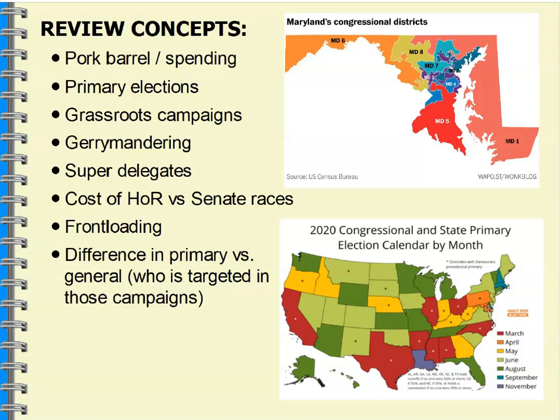Gerrymandering has had a big impact. As we see in Maryland congressional races, the Supreme Court has not stepped in on many of those cases — they've pretty much said that's a political issue, not a judicial one. We solve constitutional problems, not political ones. We saw gerrymandering's impact in North Carolina, Wisconsin, and Maryland. Elections have consequences, and this is something that needs to be worked out at the legislative level.